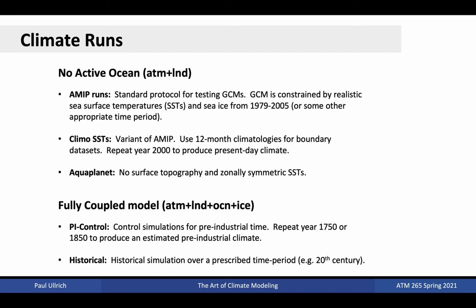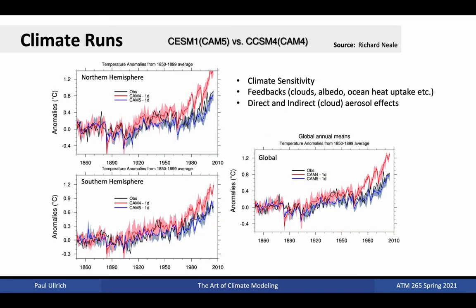We can simplify things further by removing surface topography entirely and employing zonally symmetric sea surface temperatures, producing an aquaplanet type simulation. On the other end of the spectrum, typical fully coupled model simulations, which employ an active ocean and ice model, include PI control and historical runs. The former refers to control simulations with pre-industrial CO2 levels in the atmosphere, while the latter refers to a simulation of a historical period with gradually increasing CO2 levels. These plots show some examples of what we might see when comparing temperature anomalies in simulations conducted between 1850 and 2005 using CAM4 versus CAM5. Observed global temperatures are shown in black and provide a basis for assessment of our simulations. These types of simulations can be used to examine climate sensitivity, how temperatures respond to increased carbon dioxide concentration, climate feedback, and direct or indirect aerosol effects.